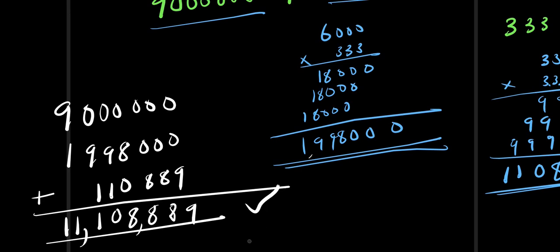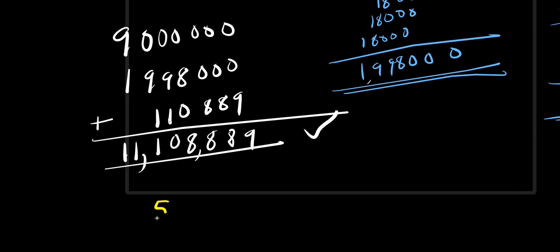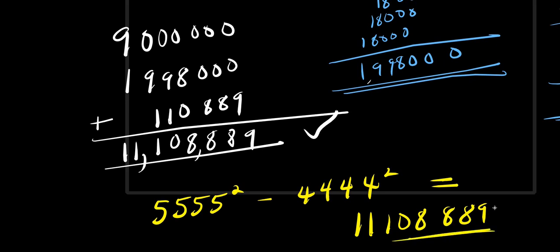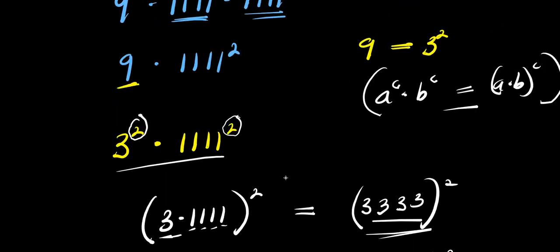So the value of 5555² minus 4444² equals 11,108,889. We have achieved this without a calculator, so that is it. Thank you, thank you and goodbye.